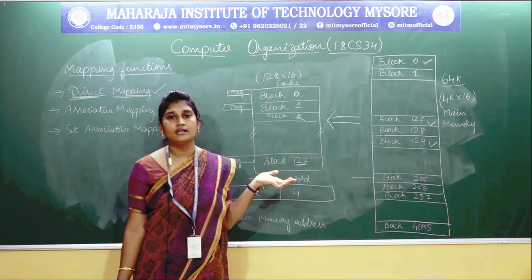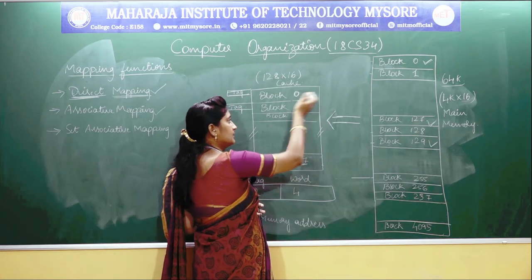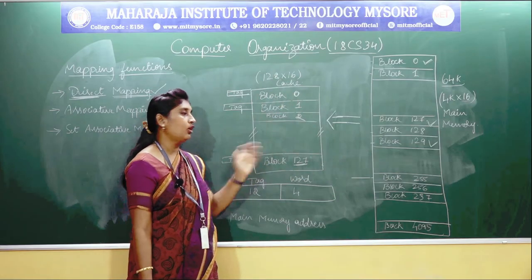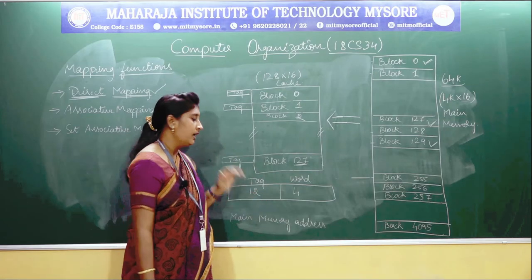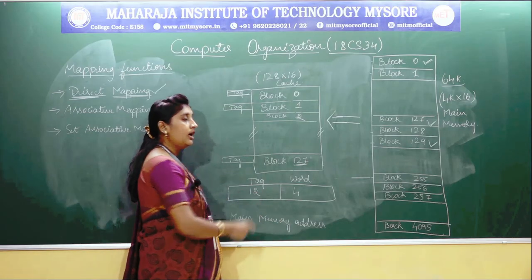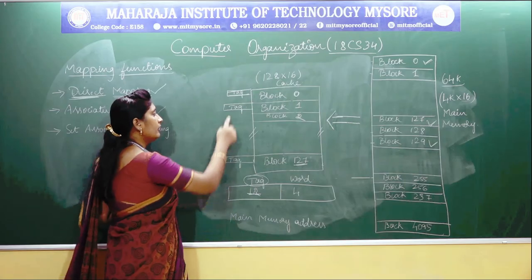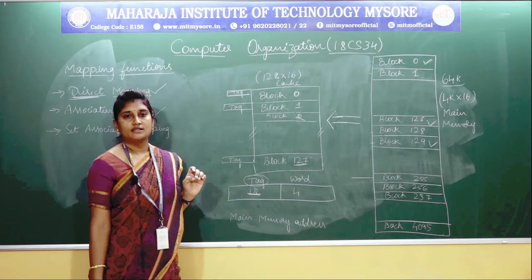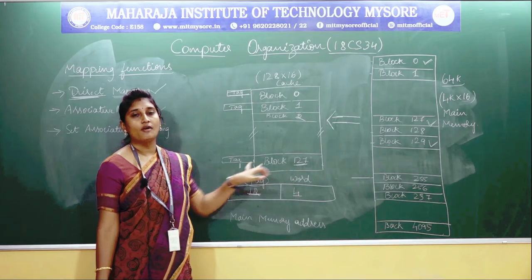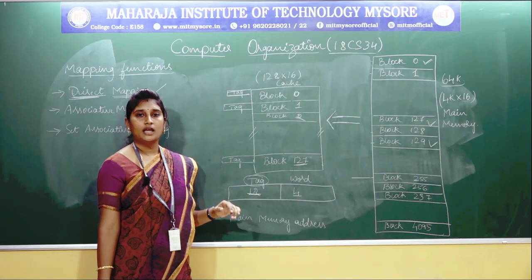In associative mapping, it is not considered that respective blocks must fit into respective cache memories. Any number of blocks in the main memory can fit into any blocks in your cache memories. Coming on to the memory address format: it will have only two fields. The higher order 12 bits will represent the tag field of the cache memories — which tag the actual data word is present in. The lower order 4 bits will represent the corresponding word of the particular tag.